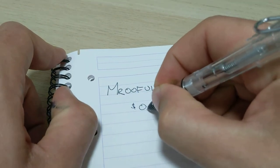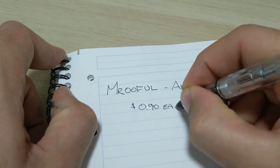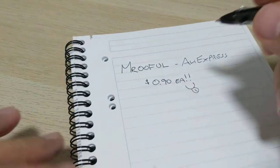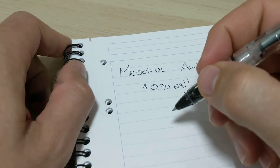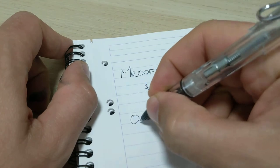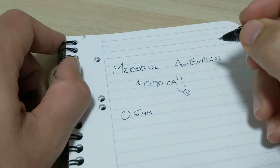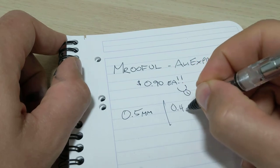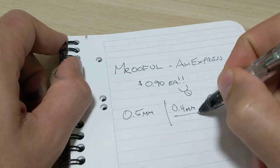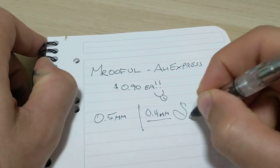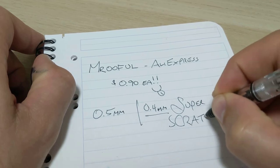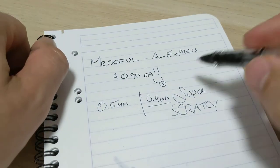I've got these on Aliexpress and they're about 90 cents each, pretty damn cheap. I mean it's not the smoothest in the world, you could find a ballpoint or gel or rollerball that's smoother than this. This is the 0.5 millimeter, there is also an option for 0.4 millimeter. The first pair I got had one of each and this one was super scratchy.